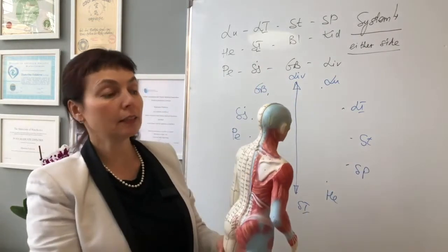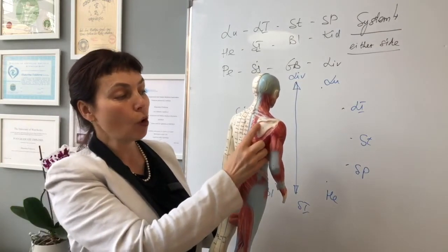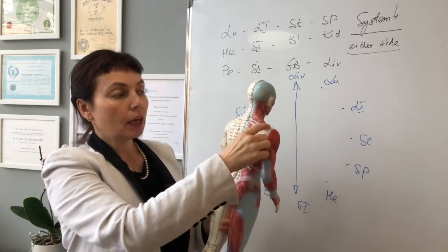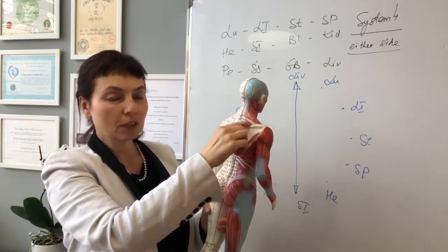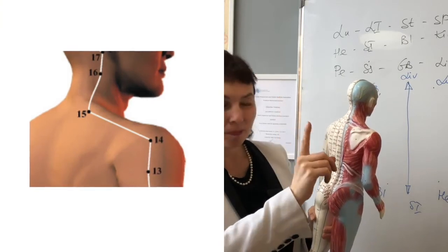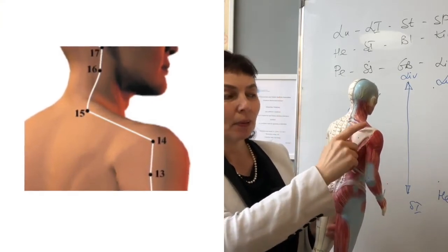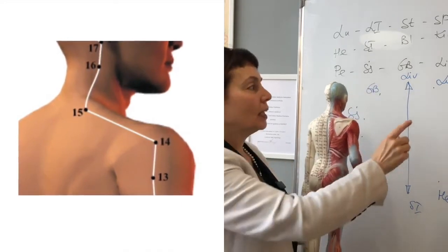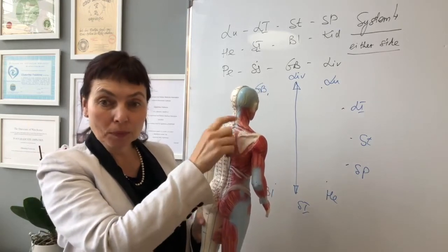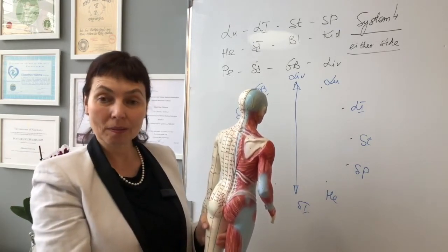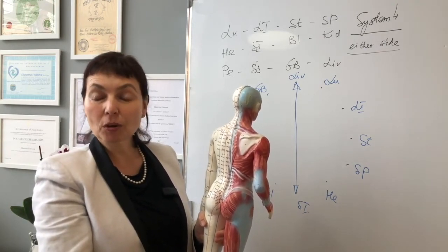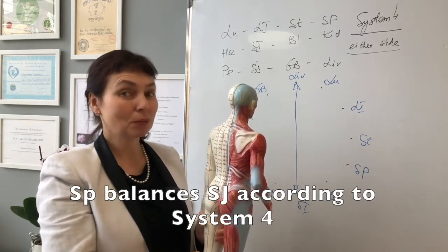But please don't forget that the small intestine occupies about two-thirds of the scapula, but the upper ridge and the top of the scapula refers to meridian Sanjiao. Don't forget that if the pain is on the top of the scapula, needling liver will not work because liver doesn't balance Sanjiao. Who will balance Sanjiao? For example, spleen. Spleen will balance Sanjiao according to System 2. That's right.